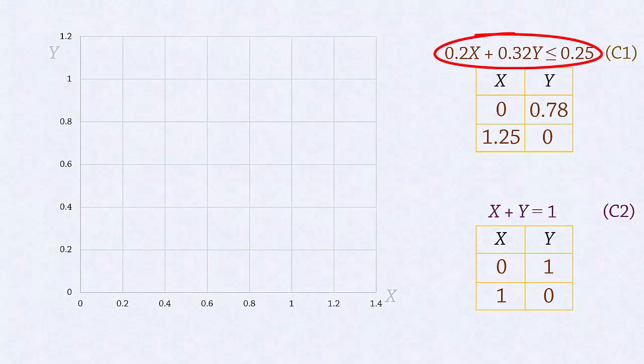In drawing the line for the first constraint, we have the points (0, 0.78) and (1.25, 0), which forms this line here. Since this is a less than or equal constraint, it is satisfied here below the line.